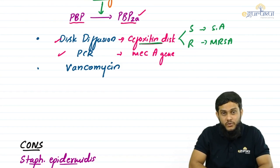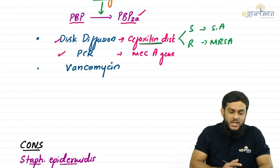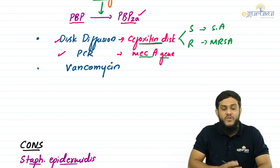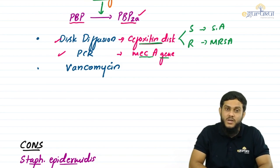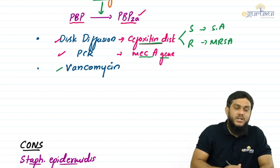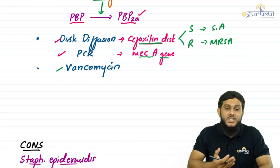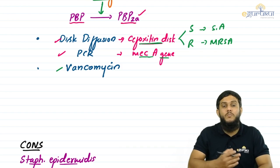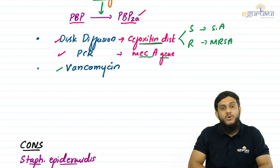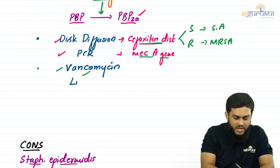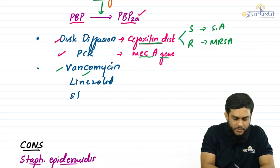The genotypic method uses PCR to detect the mecA gene. If mecA gene is present, it is MRSA; if absent, it is regular staphylococcus aureus. The drug of choice for MRSA — since it is resistant to all beta-lactam antibiotics — is vancomycin, which belongs to the glycopeptides group. Other drugs that can be used include linezolid and streptogramins.